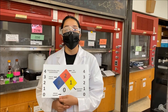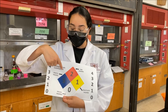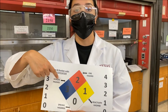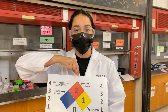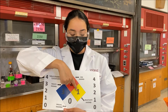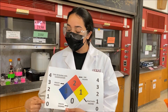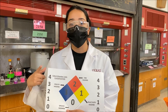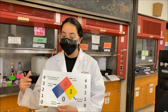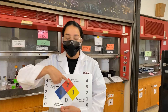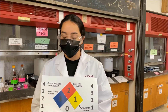In addition to the color signs, there is also a number system. The color signs show: blue for health hazard, red for flammable hazard, yellow for reactivity, and white for specific hazards. The numbers range from 0 to 4, with 0 being the least hazardous and 4 being the most. These numbers can correspond with any of the colored boxes on the hazard sign.